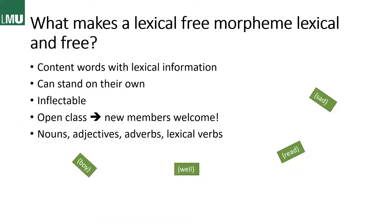Getting to morpheme types, we have lexical free morphemes. These are content words with lexical information — words like 'sad,' 'read,' 'well,' or 'boy' — they all have some kind of lexical information. They can stand on their own, so you don't need any other morphemes for them to make sense, as opposed to, say, -ing. They're also inflectable — so you can say 'boy' or 'boys,' or 'read' and 'reading.'